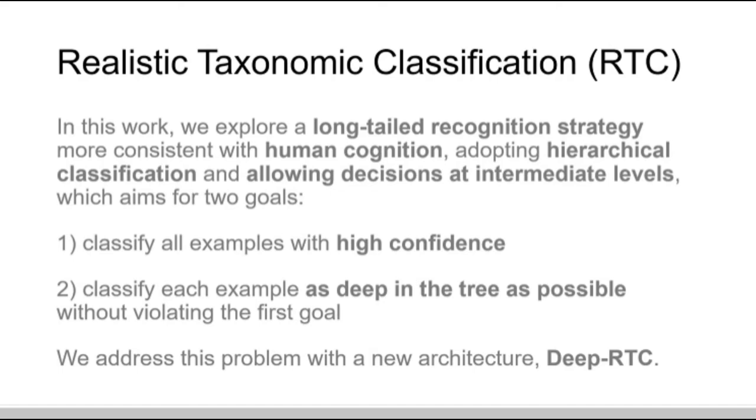There are two goals for this task. The first goal is to classify all examples with high confidence. The second is to classify each example as deep in the tree as possible without violating the first goal. We denote this task as Realistic Taxonomy Classification, RTC.